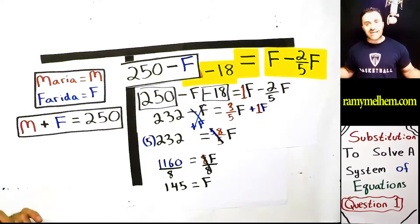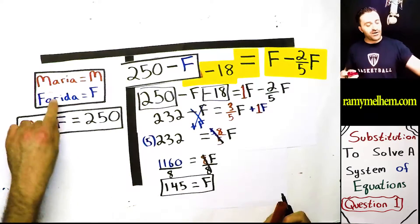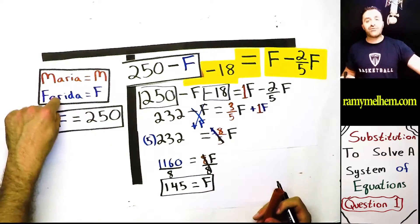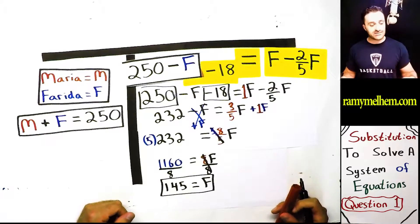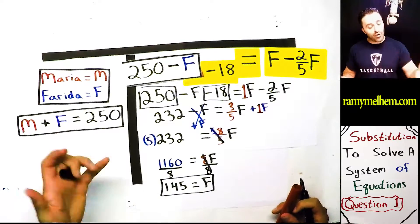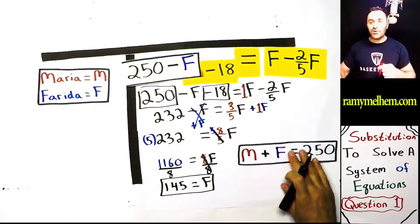Holy, we got this answer, guys. Look, F is 145. What does F stand for? It's right here. F is Farida. We know how much Farida has. Could we not figure out what Miriam has or Maria? I mean, of course we can, because look what this says. It says that when you add them up, you get 250. So we can just subtract 250. We can go. We can write it out like this.